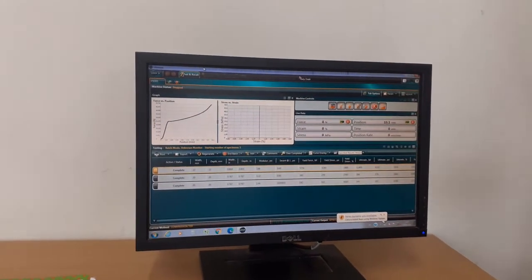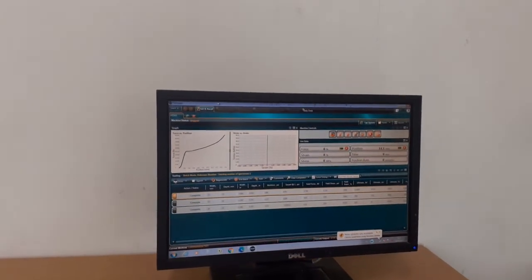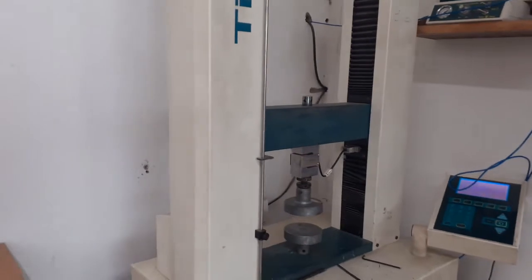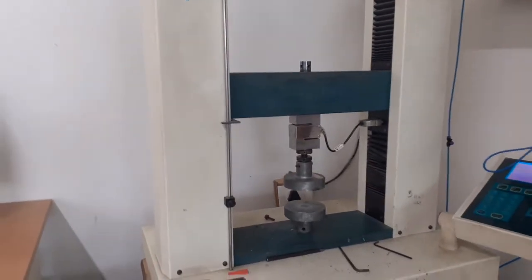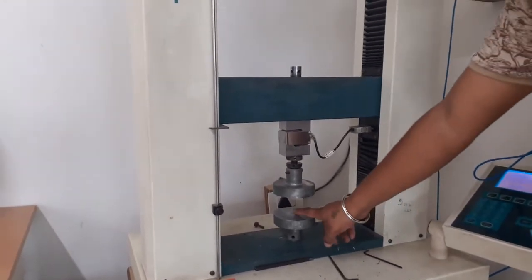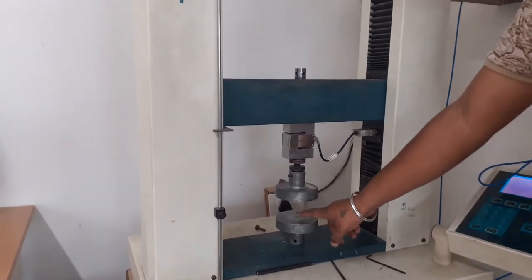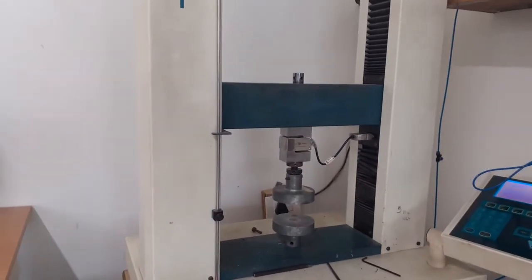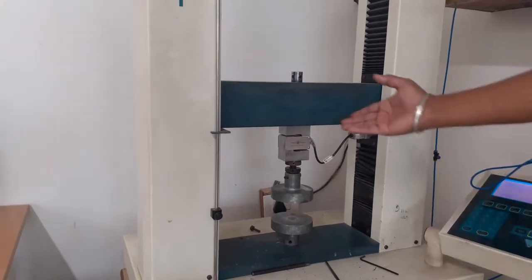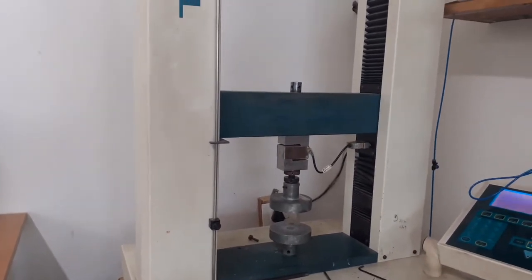For the compression test, the clamps are like this because we need to sandwich our sample in between these flat clamps. We use a 50 kilonewton load cell, so first we have to cut the sample.